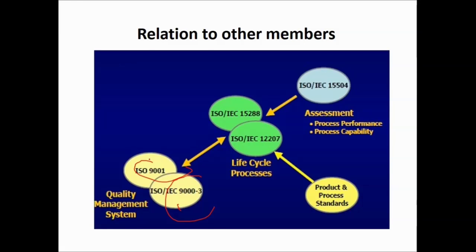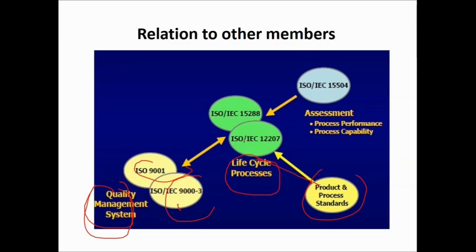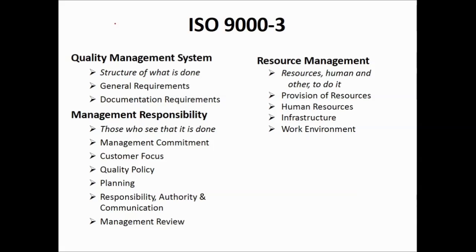ISO 9001 is a broad umbrella standard for quality management systems. ISO/IEC 12207 and ISO/IEC 15288 talk only about lifecycle processes, while ISO/IEC 9003 talks about implementing a quality management system. ISO/IEC 12207 is the products and process standard, and ISO/IEC 15504 covers assessment of process conformance and capability.